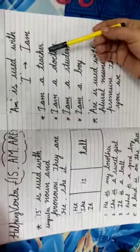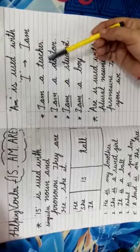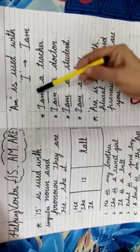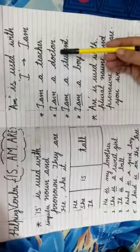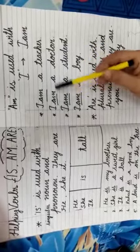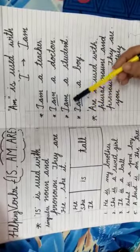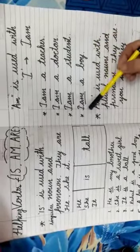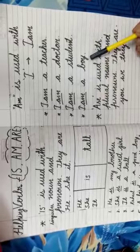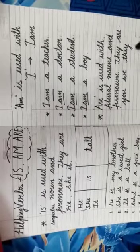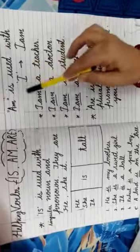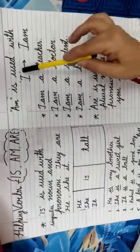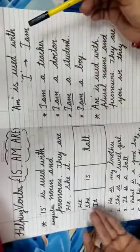Now let's see some examples. I am a teacher. Here we are using am with I. I am a doctor. Am is used with I. I am a student. I am a boy. I am a girl. I am a mother. I am a father. I am your uncle. This way you can make so many sentences. But you have to keep it in mind that am is always used with I. You can't use am with he, she, it.